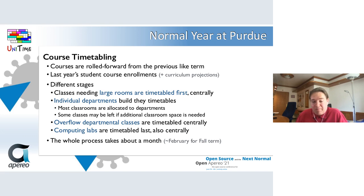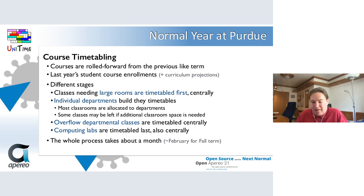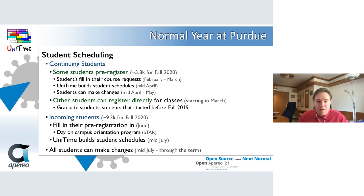If a department has more classes than they have space for, they can pass some classes to the so-called need room problem, and these overflow departmental classes are timetabled centrally after all individual departmental schedules are done. Finally, we build the class schedule for computing labs. The whole process takes about a month, and the final class schedule for the fall term is published somewhere around the first week of March.